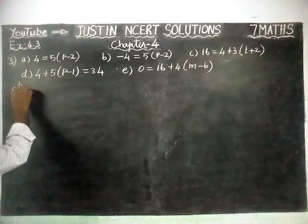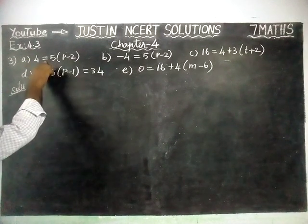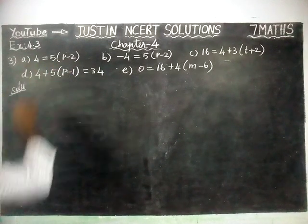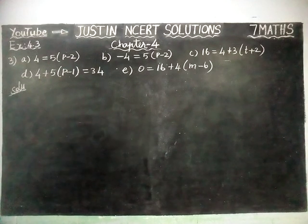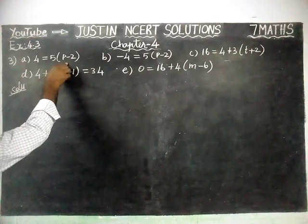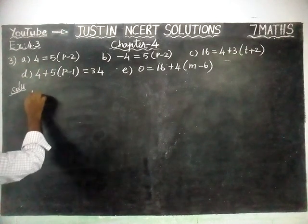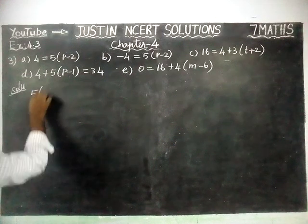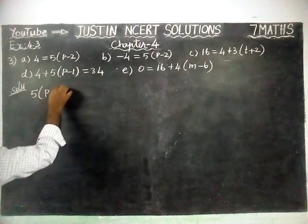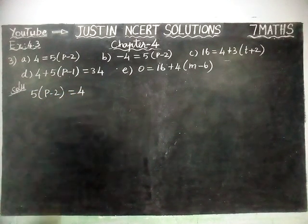Part A: 4 equal to 5(P minus 2). I am going to change the places, left hand side into right hand side. So, 5 within bracket, P minus 2 is equal to 4.